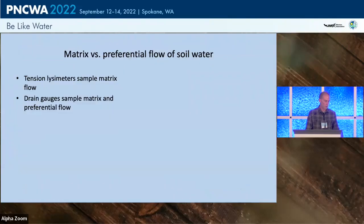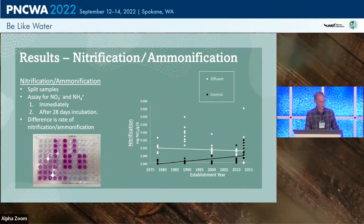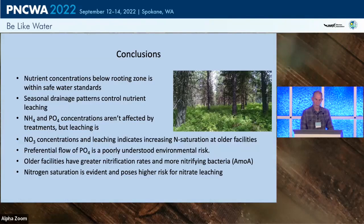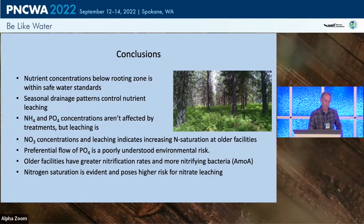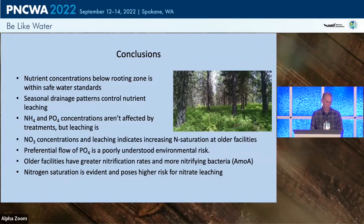These facilities are effectively treating the wastewater. There are seasonal patterns of drainage as expected in this climate. Ammonium and phosphate concentrations aren't much affected by treatment, but because there is drainage there is some small leaching from effluent facilities. Nitrate is seeing real losses, suggesting these facilities may become nitrogen saturated over decades of service.